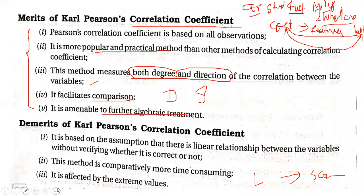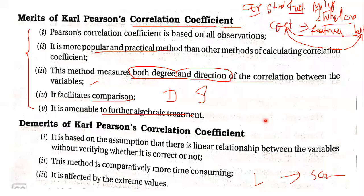Second demerit: this method is comparatively more time consuming — you have to check if you can solve using actual mean, if fractions appear you use assumed mean, find deviations, square them, find product, apply formula, do analysis — too many steps. Third demerit: it is sometimes affected by extreme values — the highest or lowest value in the problem affects the result.